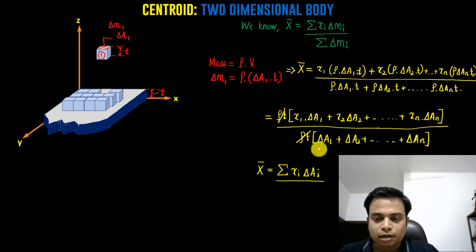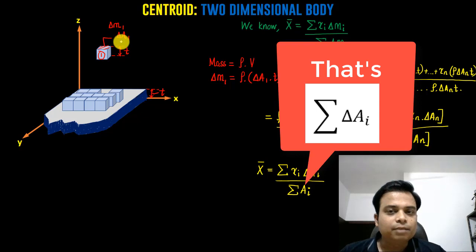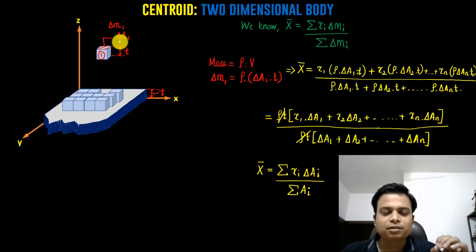A point will come when Δa will almost approach zero. In that sense, X̄ equals the integral of x·da divided by the integral of da, which is a very interesting formula.